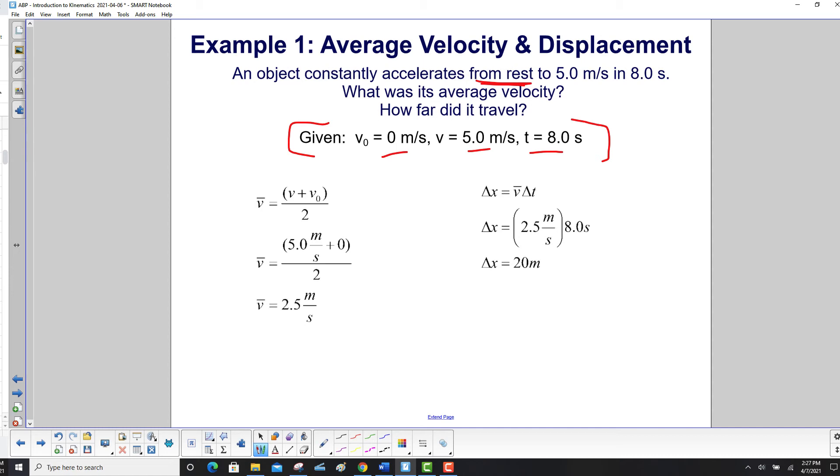So we'll use the two equations. We won't put them together just yet. Our average velocity is v plus v₀ over 2. So that's five plus zero divided by two. And we get an average velocity of 2.5 meters per second.